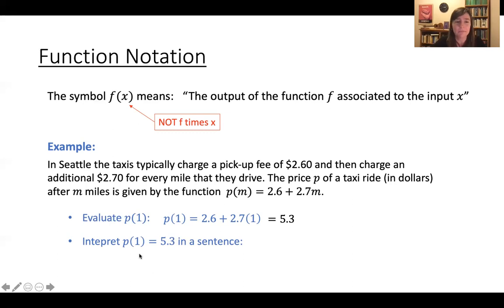Something maybe equally important is to be able to interpret this result above. Like to interpret it in a sentence. So what does it mean that p of 1 equals 5.3? Well, this just means that the price of a 1 mile taxi ride is $5.30. And so it's a nice skill to be able to go back and forth between reading some equation like this or some identity, something mathy in function notation and recognizing what it's saying and be able to put it in a sentence.